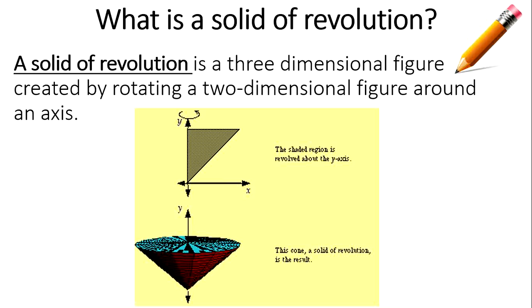The first thing we want to talk about is: what is a solid of revolution? A solid of revolution is a three-dimensional figure created by rotating a two-dimensional figure around an axis or a line. When you see this picture, our 2D object is a triangle, and this circular arrow notation is telling us to rotate or revolve around—or about—the y-axis, or the vertical axis.